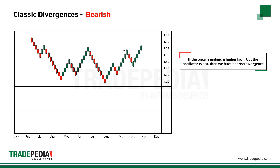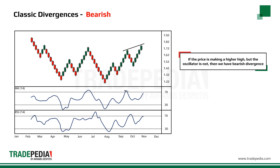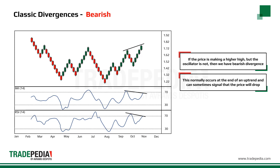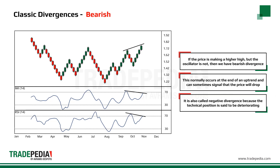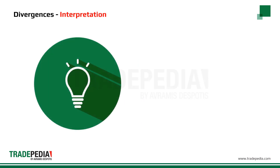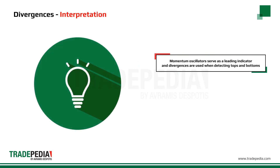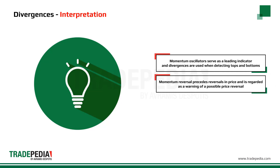If the price is making higher highs but the oscillator is not, then we have a bearish divergence. Momentum oscillators serve as a leading indicator, and divergences are used when trying to detect market tops and bottoms. Momentum reversal precedes reversals in price, and therefore a shift in momentum is regarded as a warning of a possible price reversal. However, not all divergences result in good signals, especially during a strong trend.